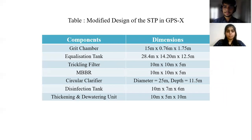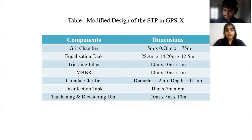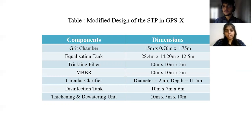By using various literature reviews and STP design guides, we calculated the dimensions of the modified STP. The components include the grit chamber, equalization tank, trickling filter, MBBR, circular clarifier, disinfection tank, and thickening and dewatering unit, each with the following calculated dimensions.